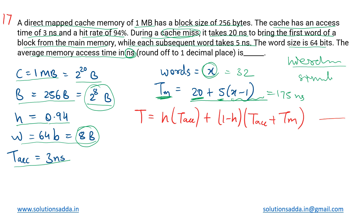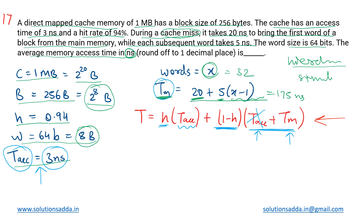The average access time formula is: AMAT = h × t_cache + (1 − h) × (t_cache + t_memory) for hierarchical access. In case of a cache hit we use h × t_cache; in case of a cache miss we need both t_cache and t_memory. For simultaneous access, the t_cache term is dropped from the miss penalty, leaving just t_memory.